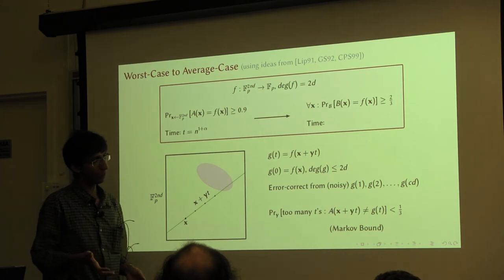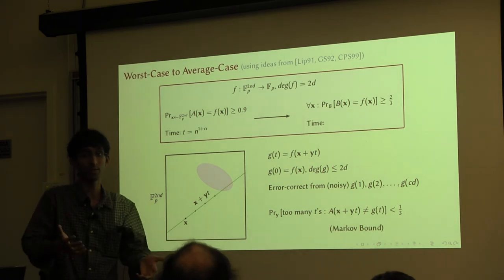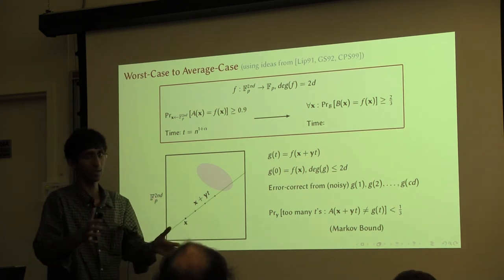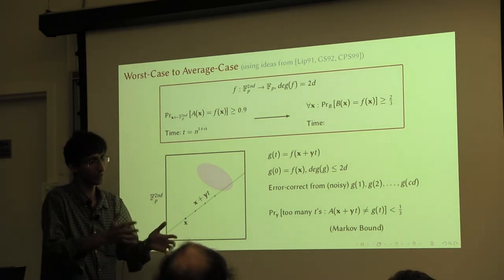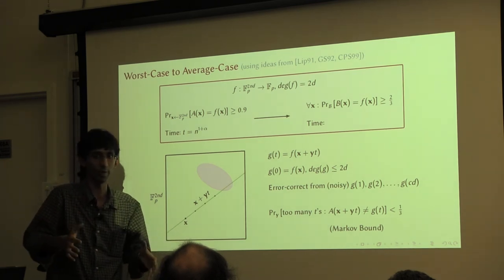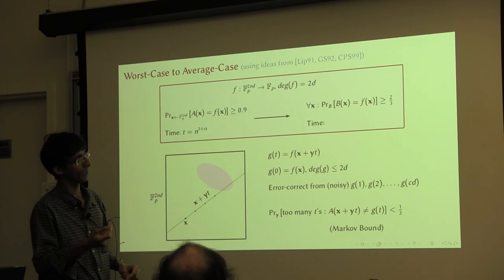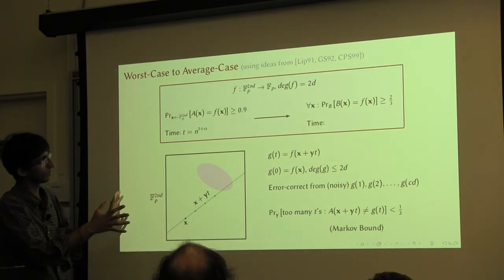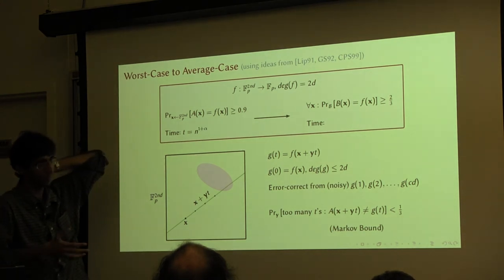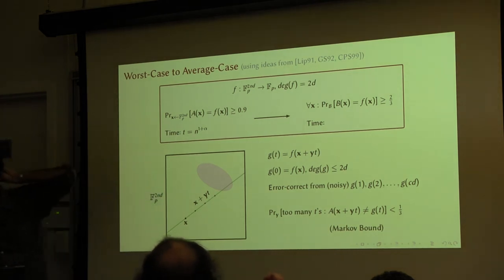But one thing you can do in such a case is list decoding. You say: I have this codeword which is corrupted, maybe only 30% of it is correct. Give me the list of all possible codewords near this corrupted codeword — codewords which are 30% correlated with it, which could possibly have been the actual codeword from which you obtained this corrupted version. It turns out you can exploit this to get better reductions. So far the only property we used is that f is a low-degree polynomial. But in order to exploit list decoding, you need certain other properties which f fortunately turns out to have.